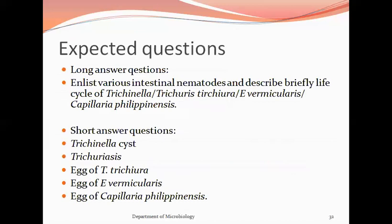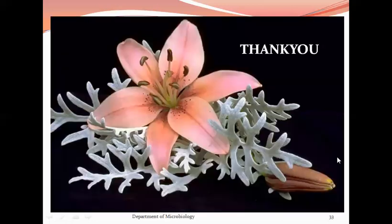With this, we end the discussion of intestinal nematodes part two. Before ending, let's look at some expected questions. Long answer questions may include: enlist the various intestinal nematodes and describe briefly the life cycle of either Trichinella spiralis, Trichuris trichura, Enterobius vermicularis, or Capillaria philippinensis. Short answer questions may also be expected. Thank you.